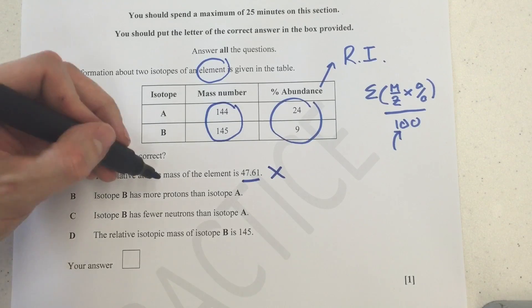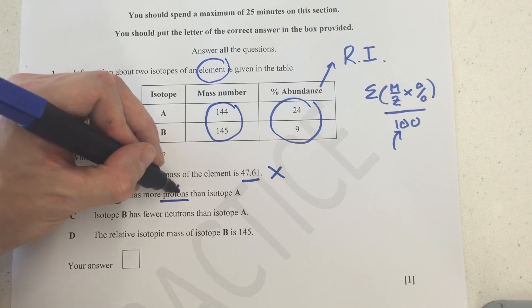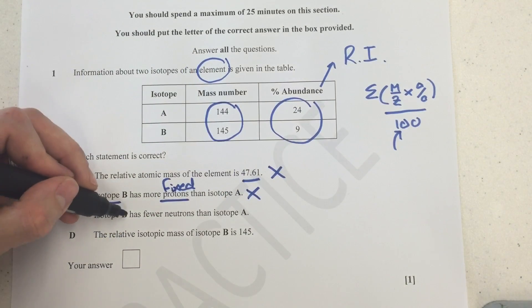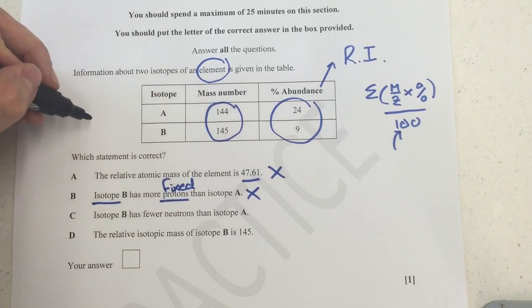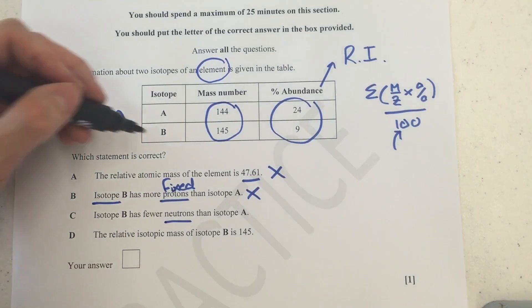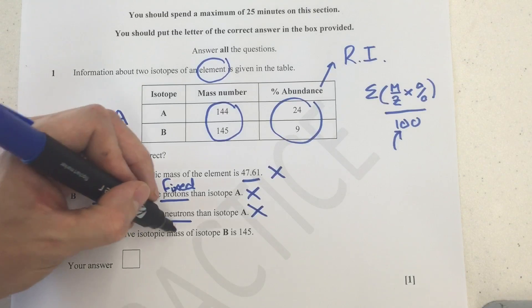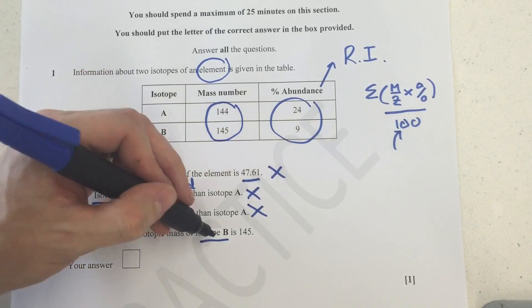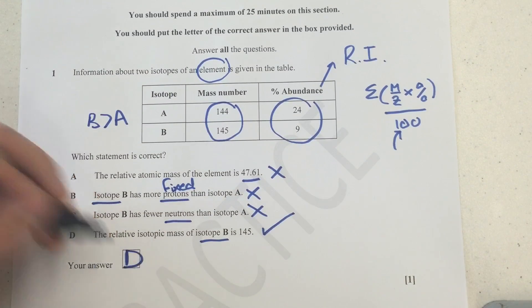Isotope B has got more protons. Well, you can't have isotopes with different numbers of protons. If you change the proton number, which remember should be a fixed quantity for an element, then you change it into a different element. So it can't be that one. Isotope B has got fewer neutrons than isotope A. Well, look at the numbers. You can see that B has actually got a bigger number than A. So that can't be true because it's the neutrons that change in an isotope, and visibly B has got a bigger number here. So it must have more neutrons. So it's not that. Relative isotopic mass of just B is 145. Well, that's kind of an obvious answer.